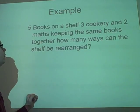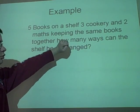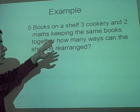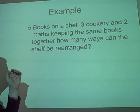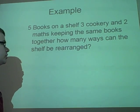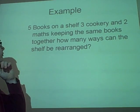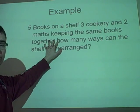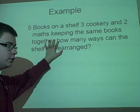Another example. Right, we have five books on a shelf, just like before, but three are cookery and two are maths. Now, keeping the same books together, how many different ways can the shelf be rearranged? So, as before, we have five factorial, so that is our number on top.